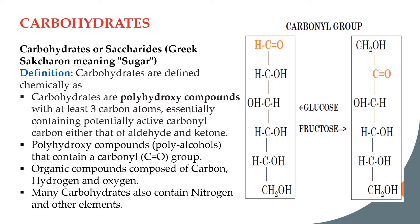According to the definition, hydroxyl groups are present in glucose at carbon numbers 2, 3, 4, 5, and 6, and in fructose the hydroxyl group is present on carbons 1, 3, 4, 5, and 6. So it is a polyhydroxy compound containing the functional groups aldehyde and ketone.